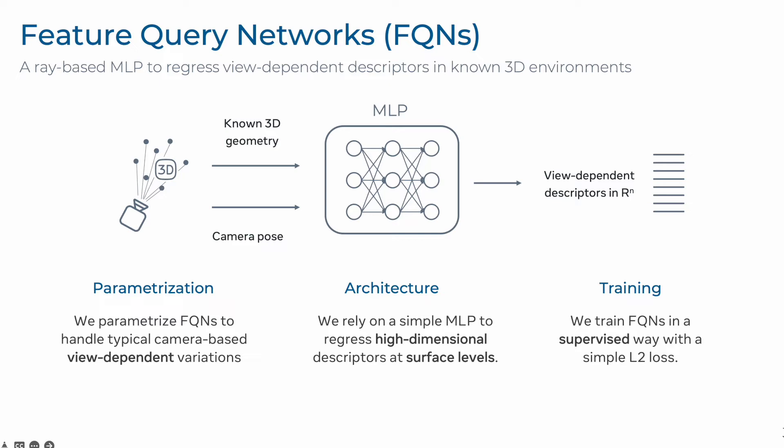Feature Query Networks are ray-based MLPs that take as input camera parameters and known 3D geometry of a given scene, and learn to output high-dimensional image descriptors using any off-the-shelf pre-trained model. We train FQNs in a simple supervised fashion, using features extracted from pose-reference images using an off-the-shelf pre-trained feature descriptor, in the hope that they will generalize to unseen viewpoints at known 3D point coordinates.